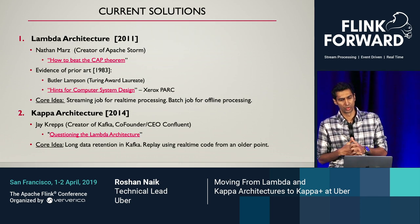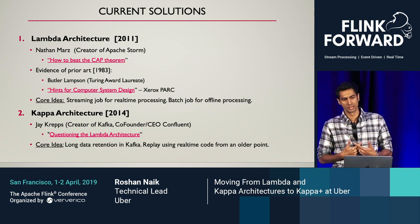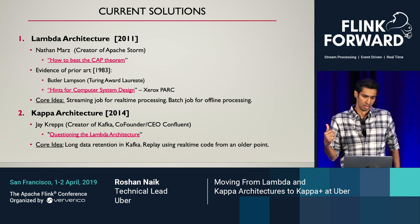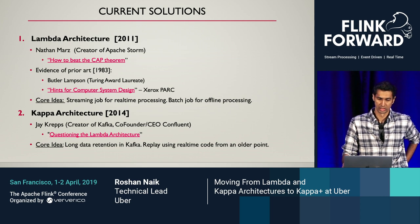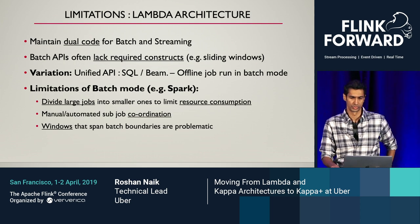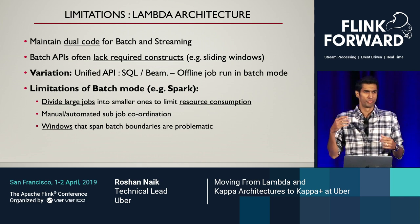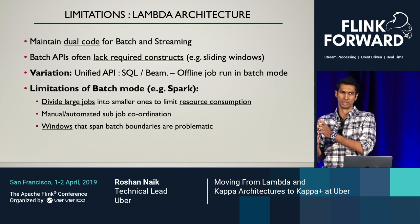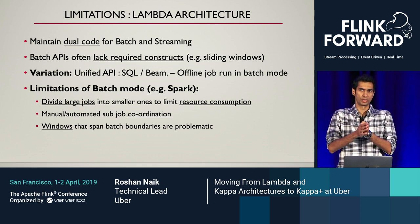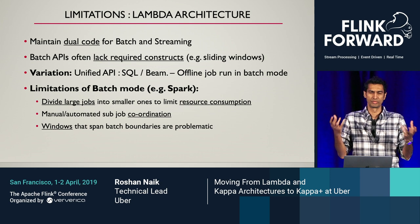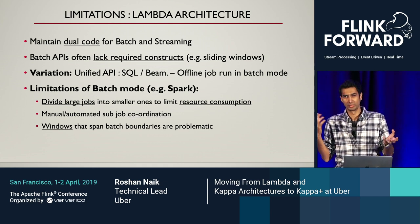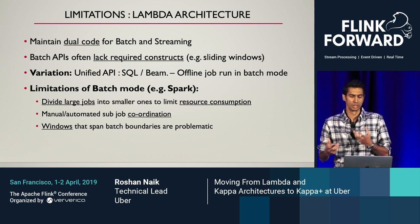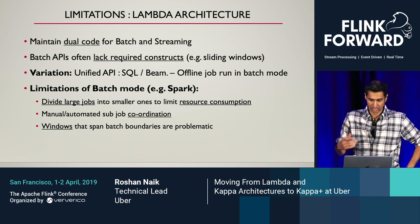The typical approach taken for these is usually either the Lambda architecture or the Kappa architecture. The Lambda architecture is basically that for your real-time job you have a streaming job, and for offline processing you have a batch job — two jobs. And the problem is that you have to maintain two code bases.